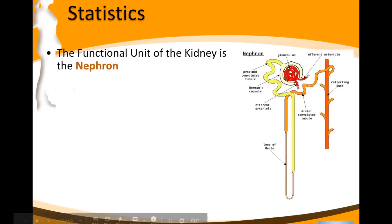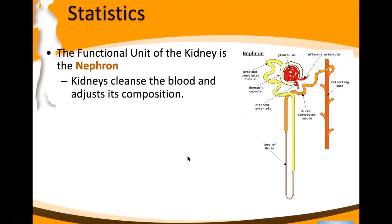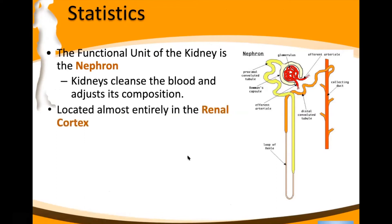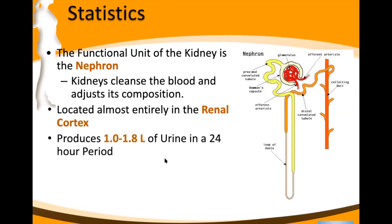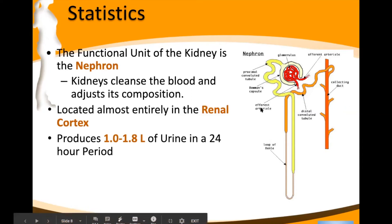This whole structure is called the nephron — it's the functional unit of the kidney. It's the smallest piece that allows the kidney to do its job, kind of like the osteon is the smallest functional unit of bone. Its job is to cleanse blood and adjust its composition. The majority of the nephron sits in the renal cortex, and then the longer pieces — the loop of Henle — drop down into the medullary pyramids.